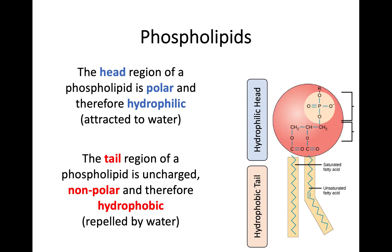So first of all, in terms of how they're arranged, phospholipids are this sort of tadpole shape, and at the top we have a hydrophilic head, meaning the head region which is exposed to the outside of the cell is attracted to water. And beneath it, the tail region is totally the opposite — it is hydrophobic, meaning it is repelled by water. And this is going to have an impact on the proteins within the cell membrane and how they interact.